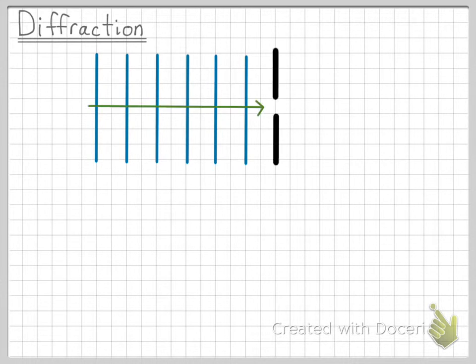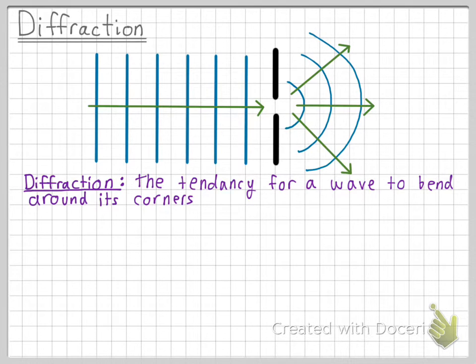This video is an introduction to diffraction. Let's say that we have an incoming plane wave. These lines would be the wave fronts. If we're going to put a barrier with an opening in front of this plane wave, the wave would actually bend around the edges. This tendency for waves to bend is called diffraction.